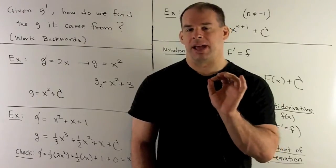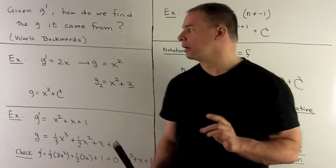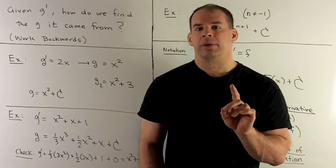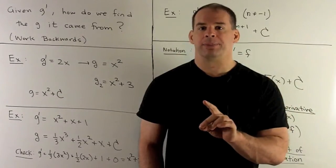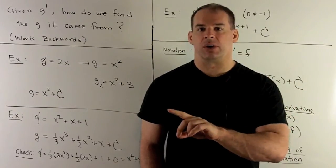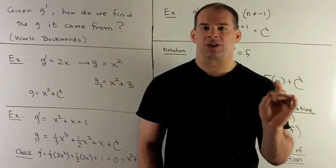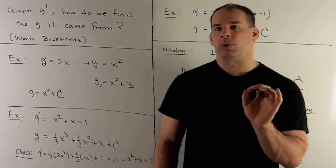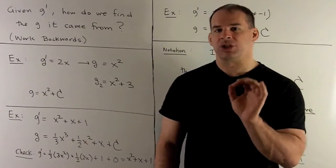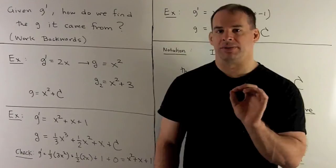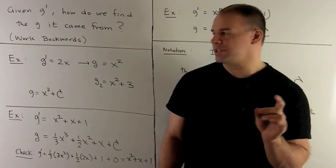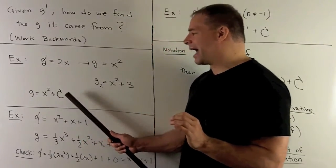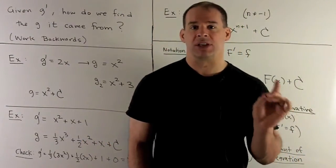We can readily identify 2x as the derivative of x squared. But note — there's a little glitch here. It's also the derivative of x squared plus 3, x squared plus 10, x squared plus 100, x squared plus a million. So when we go looking for solutions, we're not going to get just one function — we're going to get a whole bunch of them. Our solution would be x squared plus any real number we like.